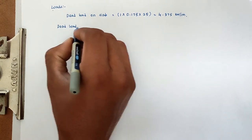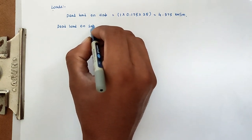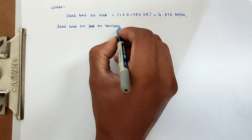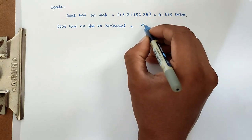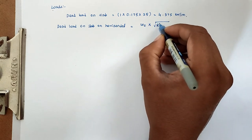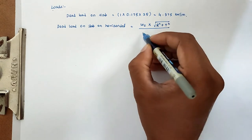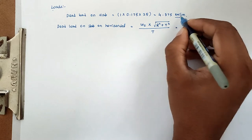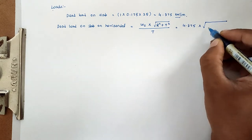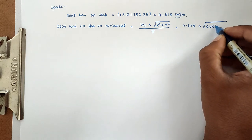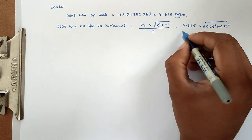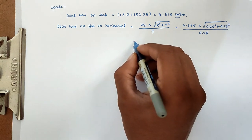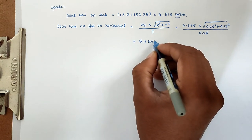Dead load on slab on horizontal = Ws × √(r² + t²) / t, where r is rise and t is tread. Substituting Ws = 4.375, √(0.25² + 0.15²) / 0.25, we calculate a horizontal dead load of 5.1 kN/m.